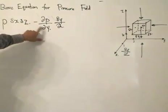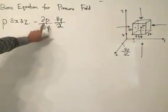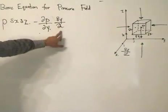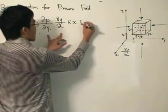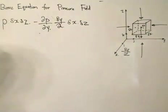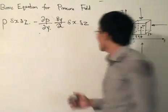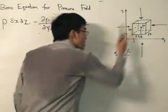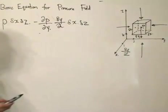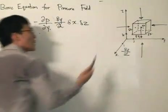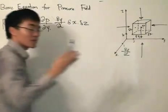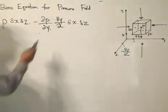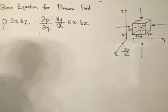So we partial differentiate with respect to y to get the change in pressure in the y direction, multiply by the length to get the pressure, and then multiply by the surface area, which is delta x delta z. The proper term for it is we're using Taylor series expansion of the pressure at the center to approximate the pressure a small distance away, neglecting higher order terms as delta x, delta y, delta z tend towards zero.